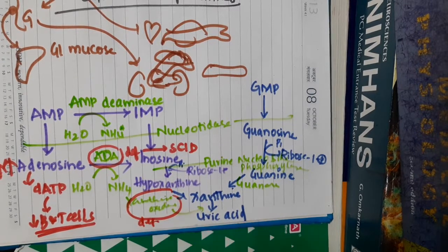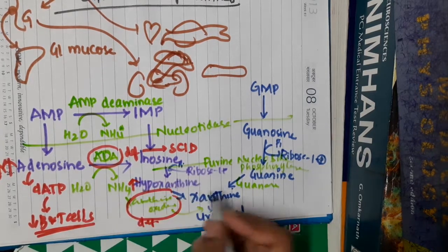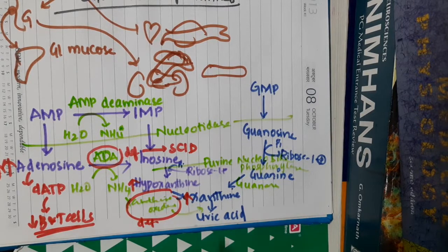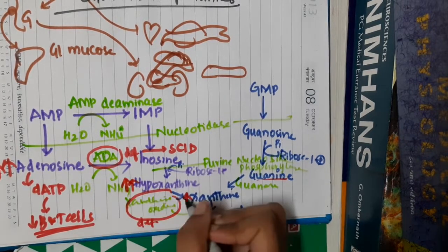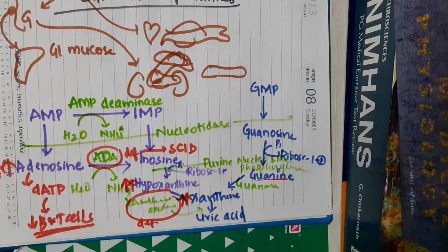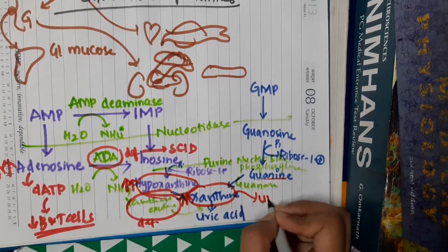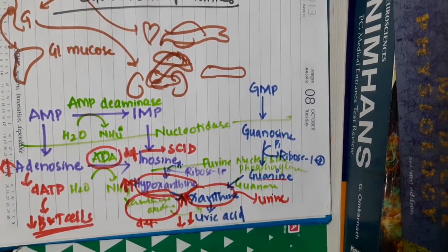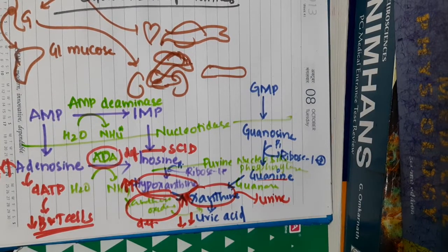Xanthine oxidase deficiency results in increased hypoxanthine and xanthine levels, because hypoxanthine cannot be converted to xanthine and xanthine cannot be converted to uric acid. As a result, xanthine and hypoxanthine crystals are seen in urine, and decreased amounts of uric acid are observed.